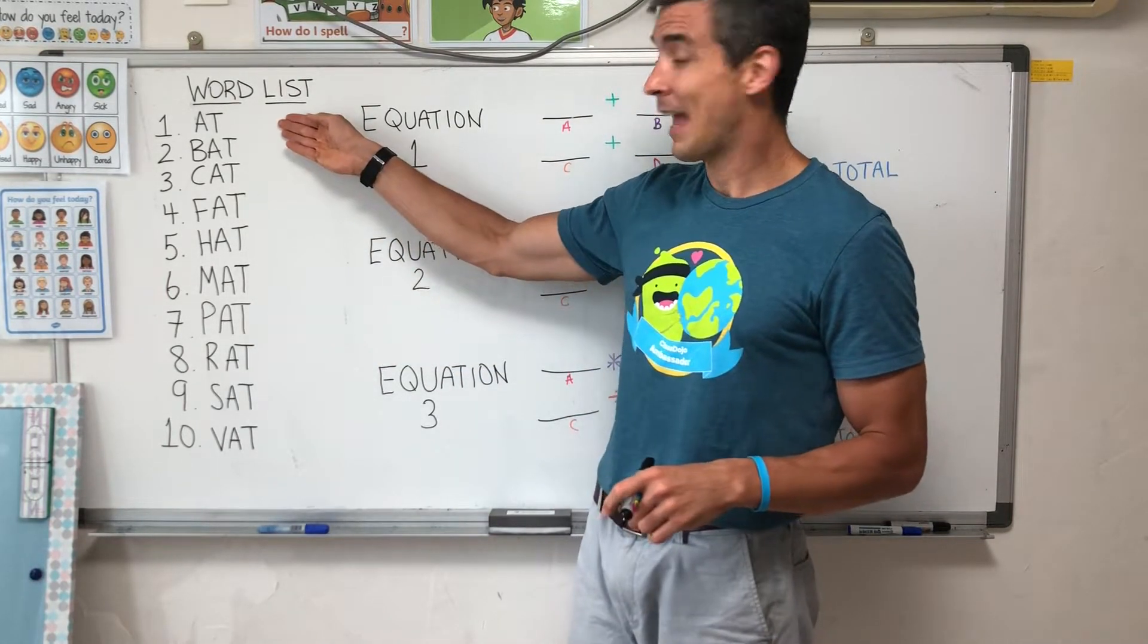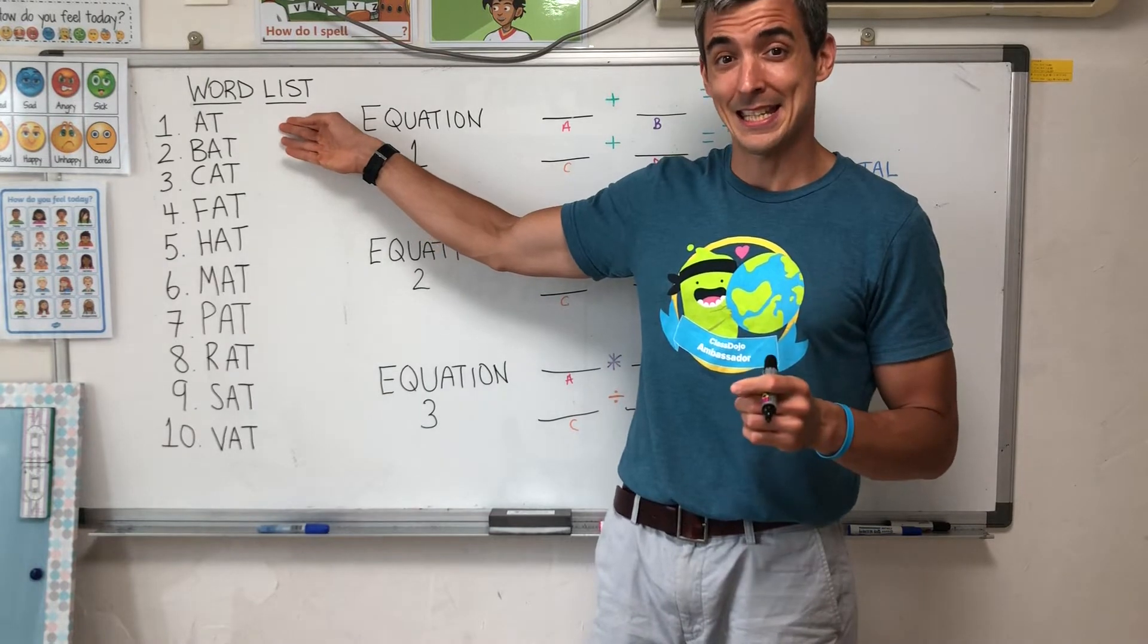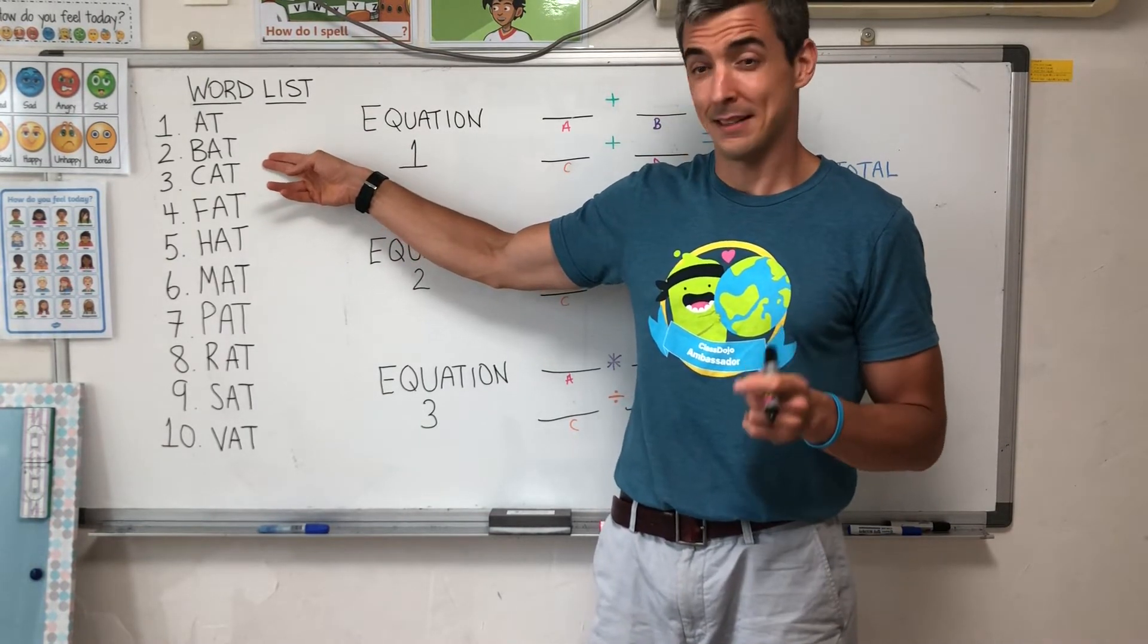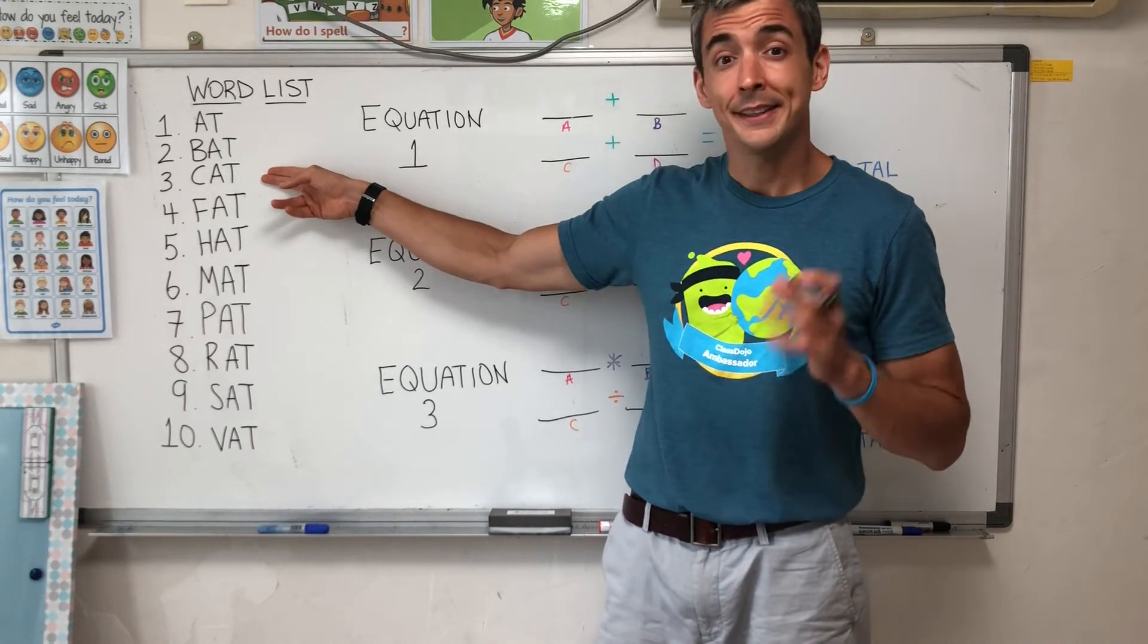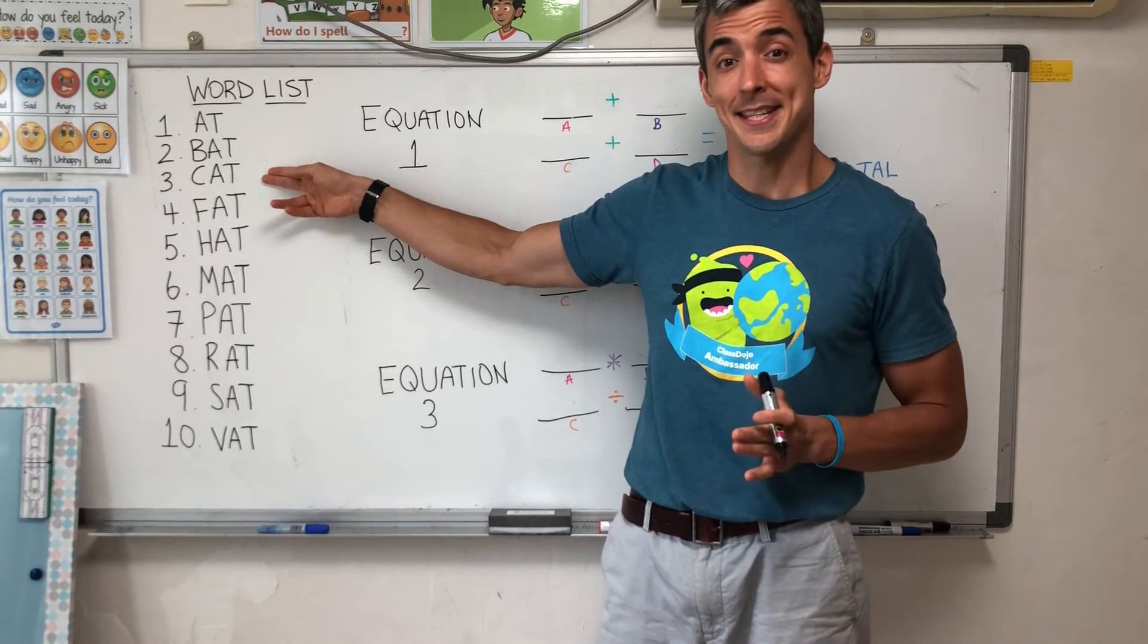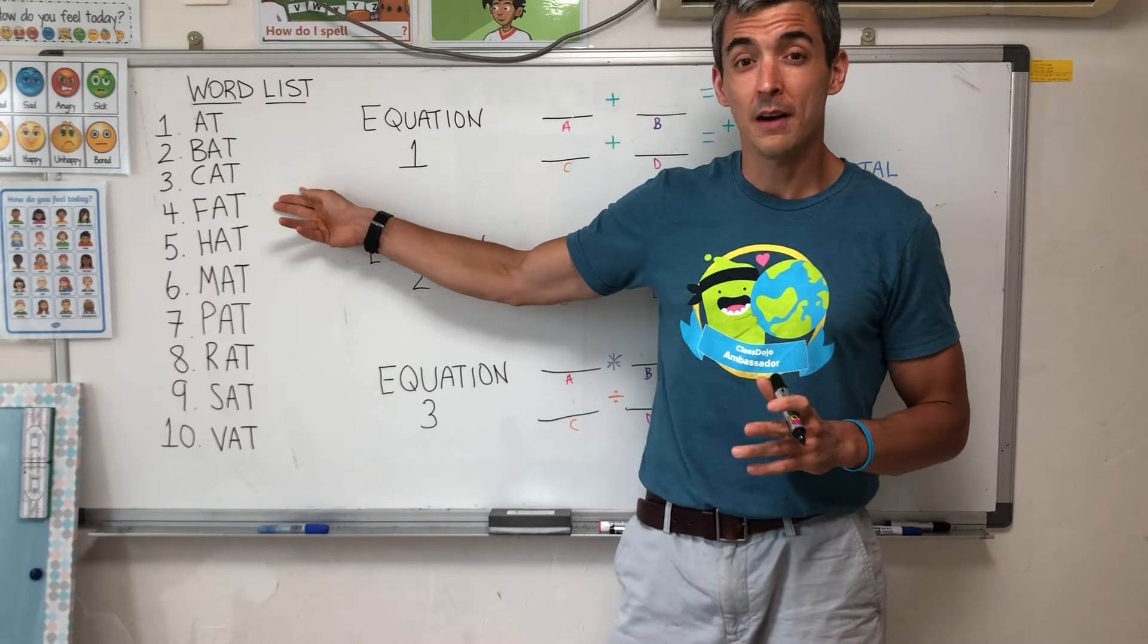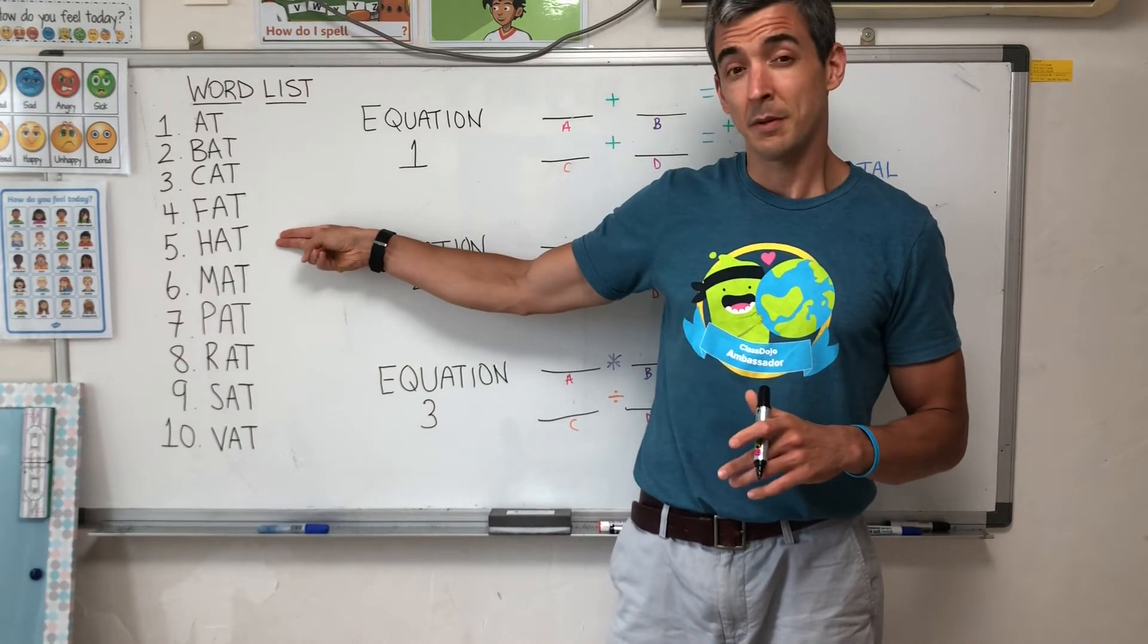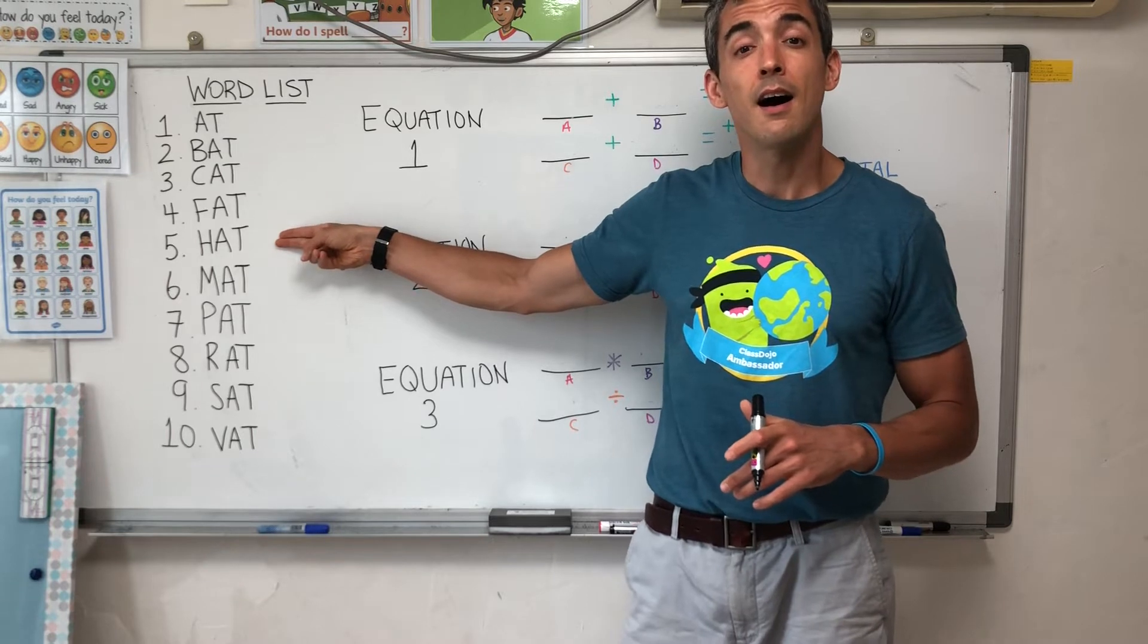Number one, at, at. Number two, b, b, bat. Number three, c, c, cat. Number four, f, f, fat.